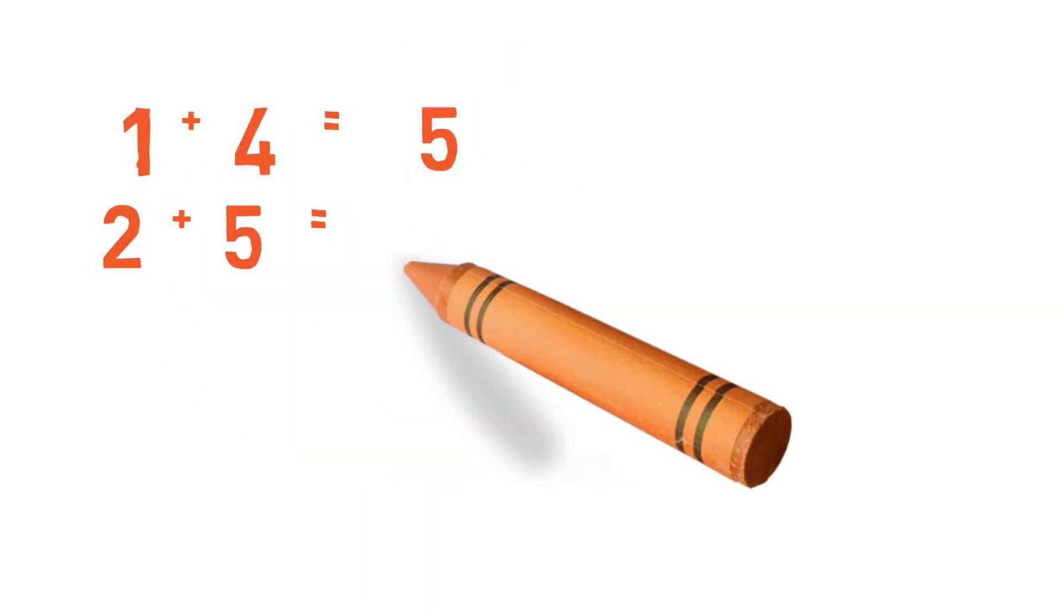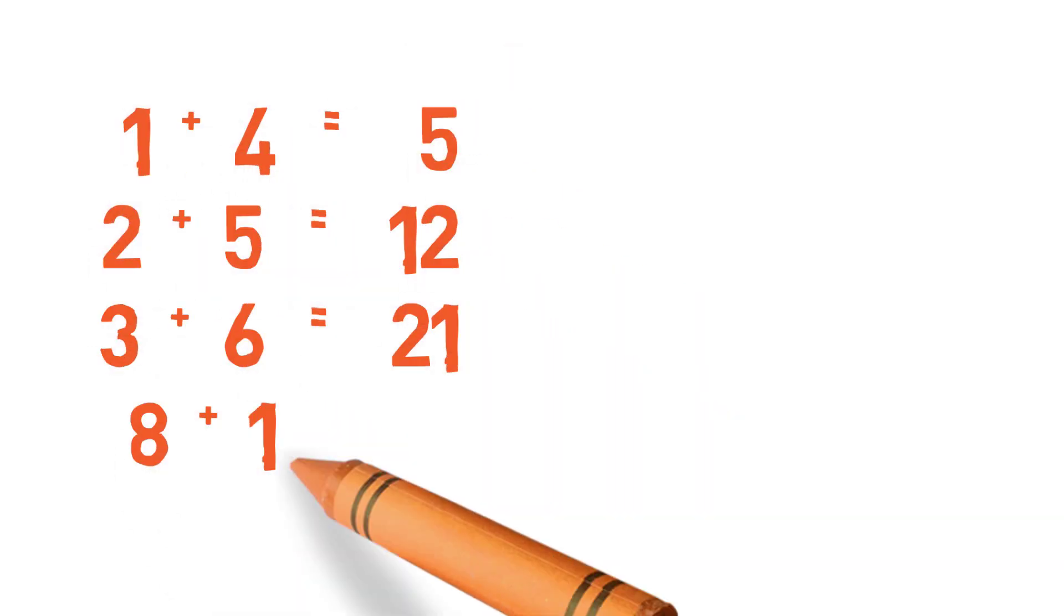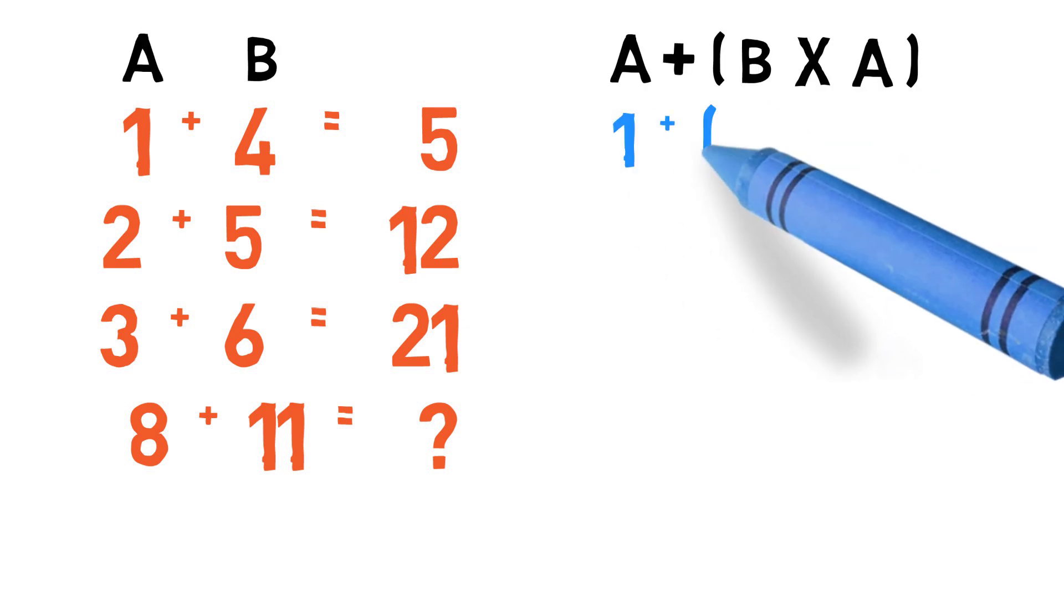But let's see if we can find another pattern. Let's look at our numbers again. The first result could also be arrived at using the following pattern: 1 plus 4 into 1. Similarly, the second result, which is 12, can be arrived at by using the same pattern, which is 2 plus 5 into 2. Now, why don't you apply this pattern to the third line and see if it works?